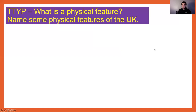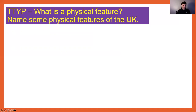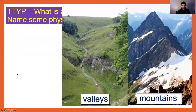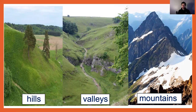So pause this video — a little pause point here. What is a physical feature? Can you remember any of the physical features in the UK that we have covered so far this term? So pause this video and have a little think. Well done, guys. Some of the physical features we have covered this term include mountains, valleys, hills, and rivers — lots and lots of different things — and we're going to go through those today.